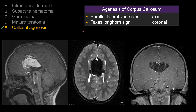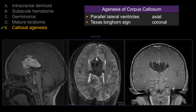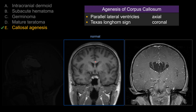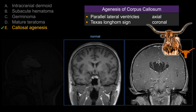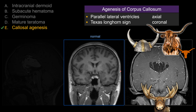Another classic feature you can see on the coronal view is the so-called Texas longhorn sign. For a normal subject, the corpus callosum prevents or pushes down the lateral ventricles. In the case of absence of the corpus callosum, you will have this abnormal upturn of the lateral ventricle that gives the appearance of a Texas longhorn. Some people think it looks like a Viking helmet, so it's also referred to as the Viking helmet sign or the moose head sign.